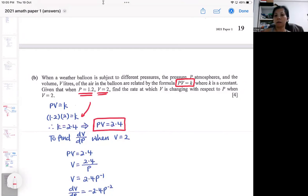Okay, then the question is asking for the rate at which V is changing with respect to P. That means, the question is asking for this.